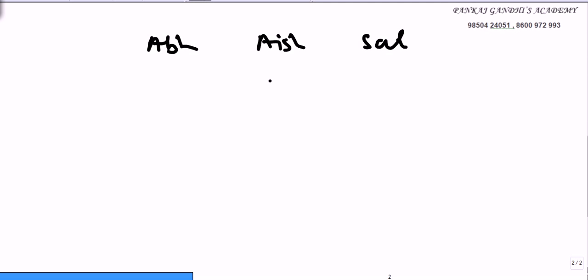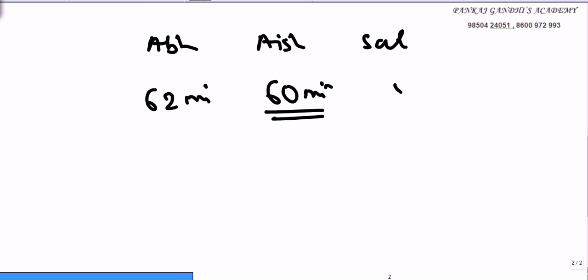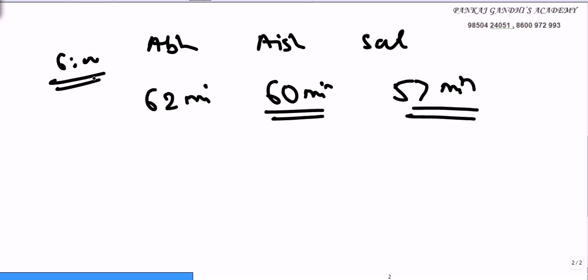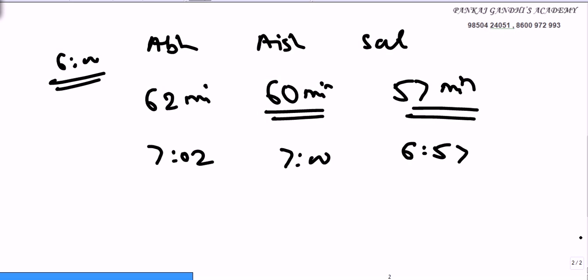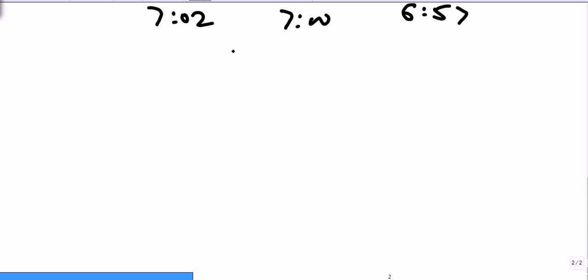Now the watches of Abhishek, Ashwarya, and Salman: after one hour, Ashwarya's is running on right time — it will show sixty minutes. After one hour, Abhishek's watch will show sixty-two minutes, and Salman's watch will show fifty-seven minutes. Theoretically they will always show different times, but practically they can show the same time if the difference between any two of their watches is twelve hours or a multiple of that. If we set all watches at six o'clock, after one hour Ashwarya shows seven, Abhishek shows seven-oh-two, and Salman shows six fifty-seven. If we want Abhishek and Ashwarya to show the same time...